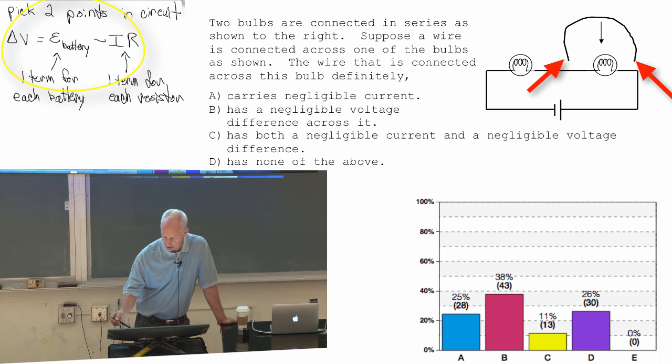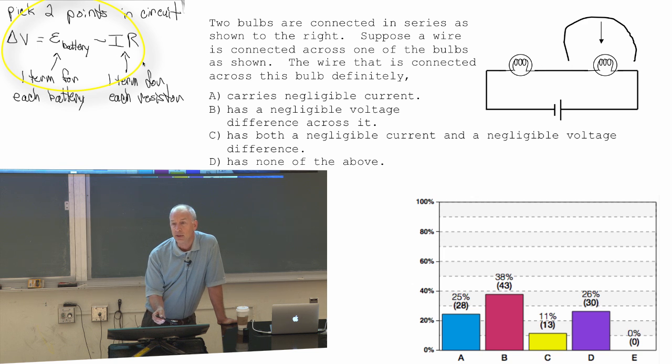between this point here and that point there after we connect it, there's no battery. If I just go from here through that wire all the way over to here, I don't cross over a battery. So there's no battery. I assume no resistance, negligible resistance, so no resistance.